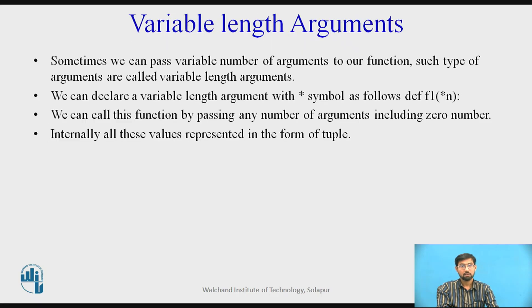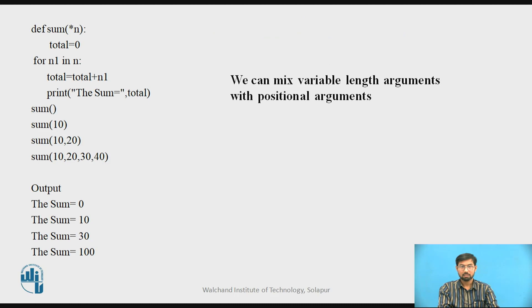Next part, variable length arguments. Sometimes we can pass variable number of arguments to our function. Such type of arguments are called variable length arguments. We can declare variable length arguments with star symbol as follows: f1 star n. We can call this function by passing any number of arguments including zero. Internally all these values are represented in the form of tuple.